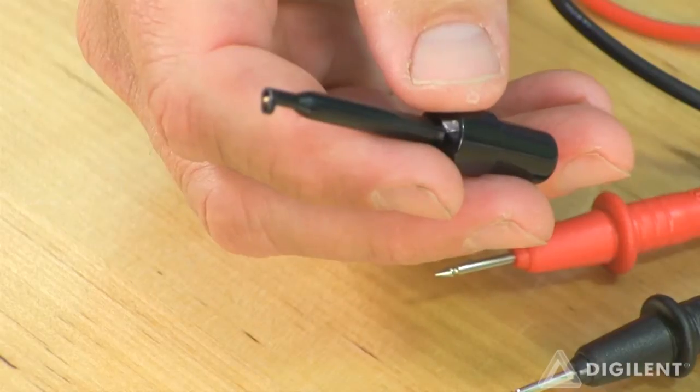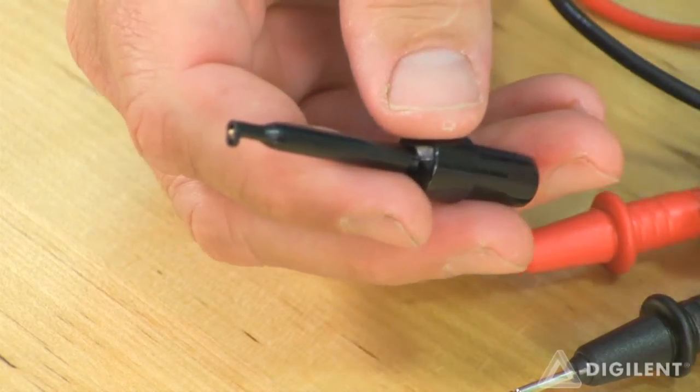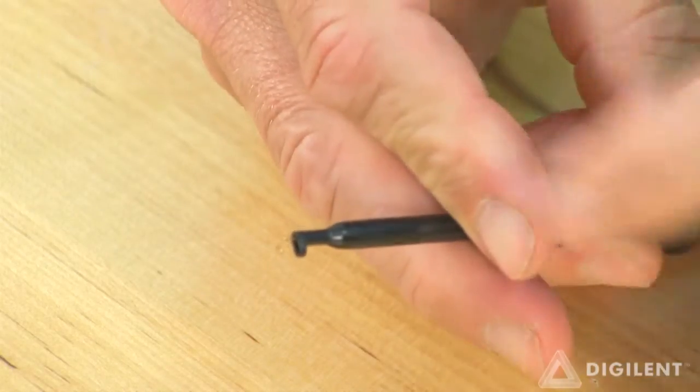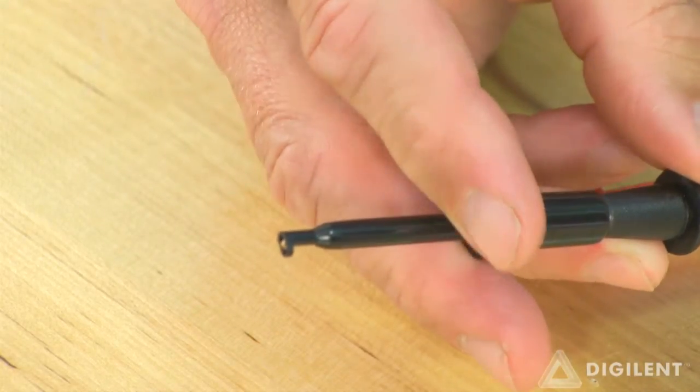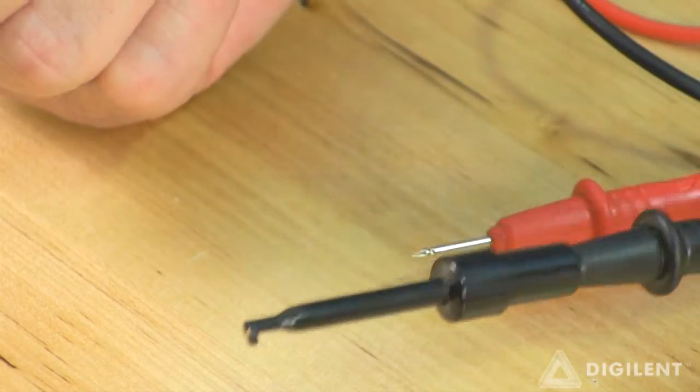As an aside, I find it very convenient to use test clip adapters like these on my DMM. They slide onto the probes, then I can simply clip my probes directly to the circuit at the appropriate points. This leaves my hands free while making measurements. They're available at most electronic stores.